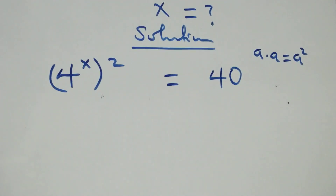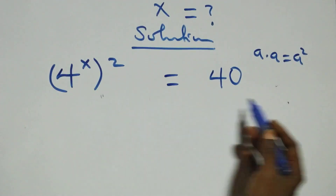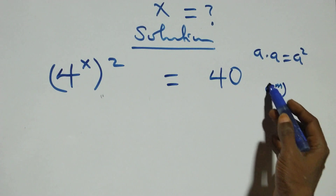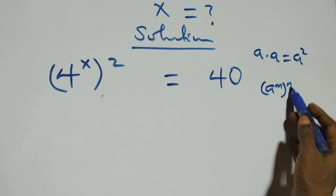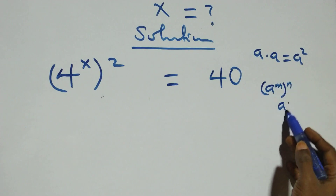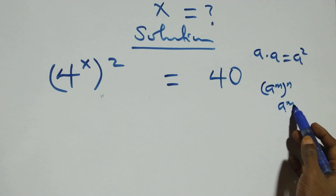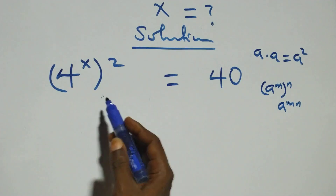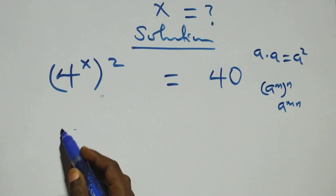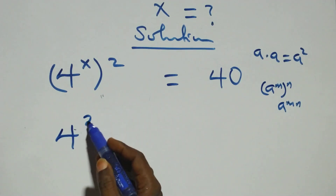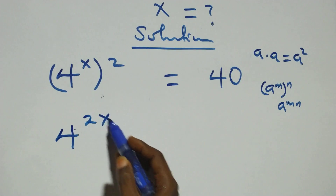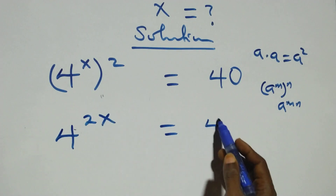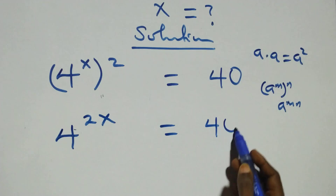Then here, this power multiplies. Following the rule: a raised to power n, all raised to power n, is the same thing as a raised to power n·n. That is, this power multiplies, so we have 4 raised to power 2x equals 40 on this side.